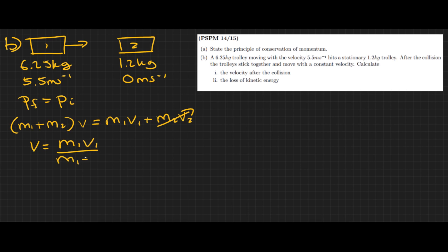So v equals m1v1 over (m1 + m2), which is 6.25 times 5.5 over 6.25 plus 1.2. That is our final velocity, and if you calculate it you will get approximately 4.61 meters per second.